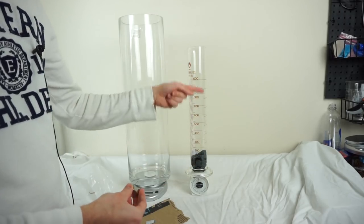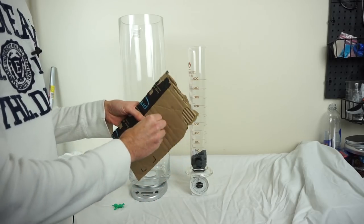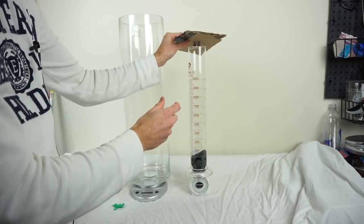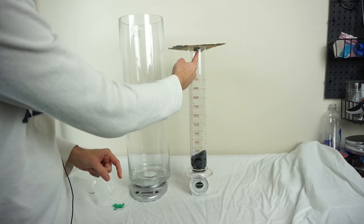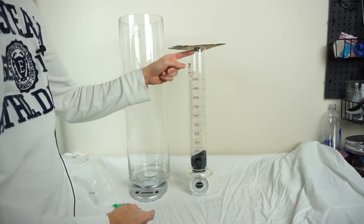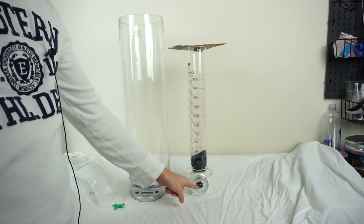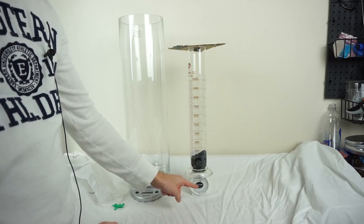So the question is, if I have a container on a scale, and I have a weight in this container at the top, and then the weight drops off the top, while it's falling, does the weight on the scale increase, decrease, or stay the same?